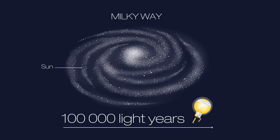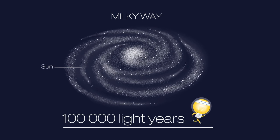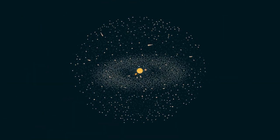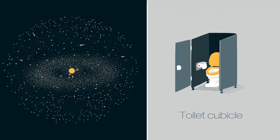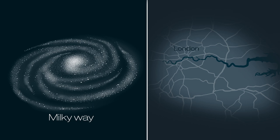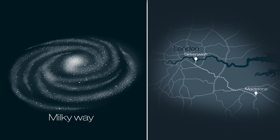Light takes a hundred thousand years to cross our galaxy. If the whole of our solar system, including the vast bubble of comets surrounding us, was the size of a toilet table, the Milky Way would span the distance from Greenwich to Maidstone.